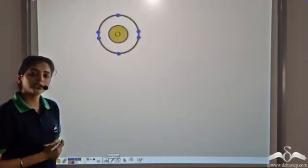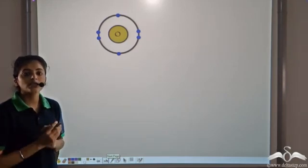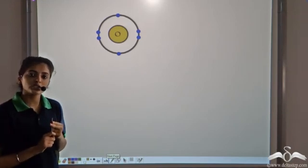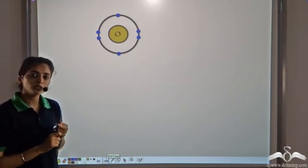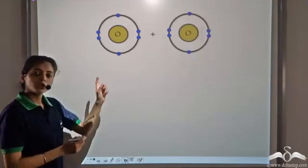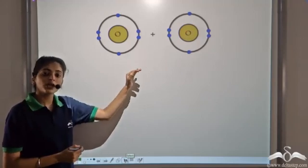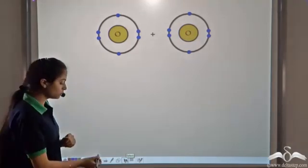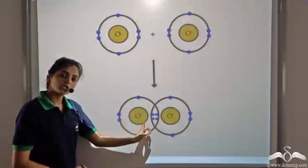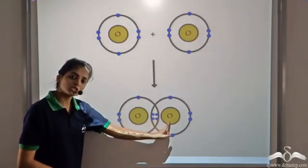Let's take another example. We have an oxygen atom. Oxygen has six valence electrons, and it is short of two electrons. Now it combines with another oxygen atom. Both the oxygen atoms are short of two electrons, so they share two electrons each.